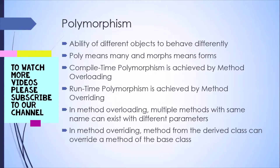Now coming to our final concept which is called polymorphism. In English terms, poly means many and morph means forms, so that means many forms. In layman terms, it means the ability of an object to behave differently — it could have different meaning at different places. In the real world, you can consider an example of an animal which can change its color or its nature depending on the environment.